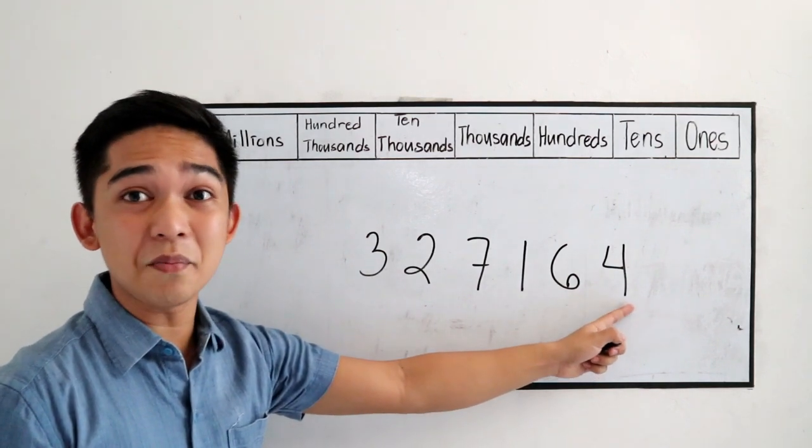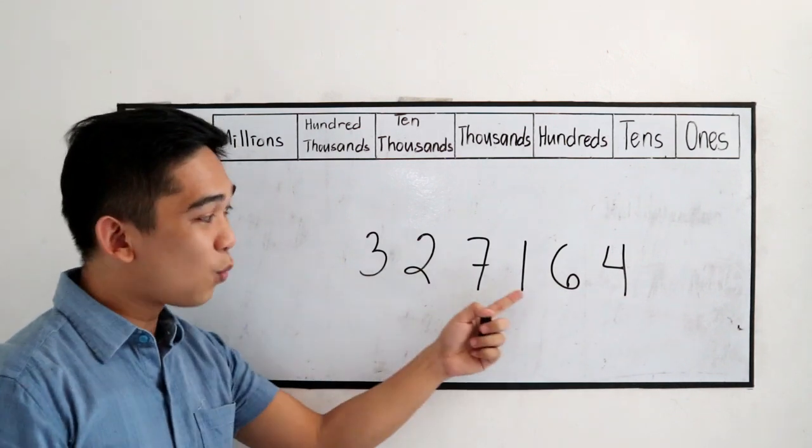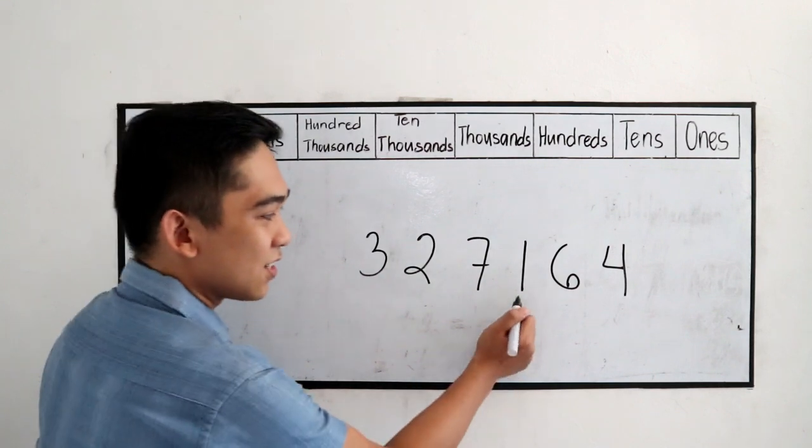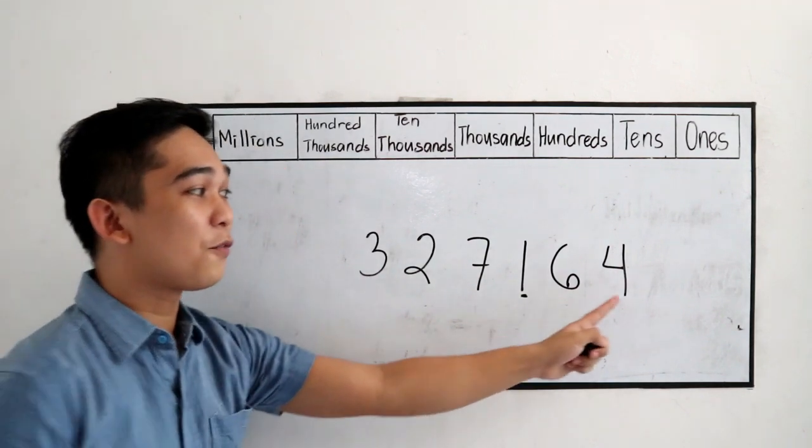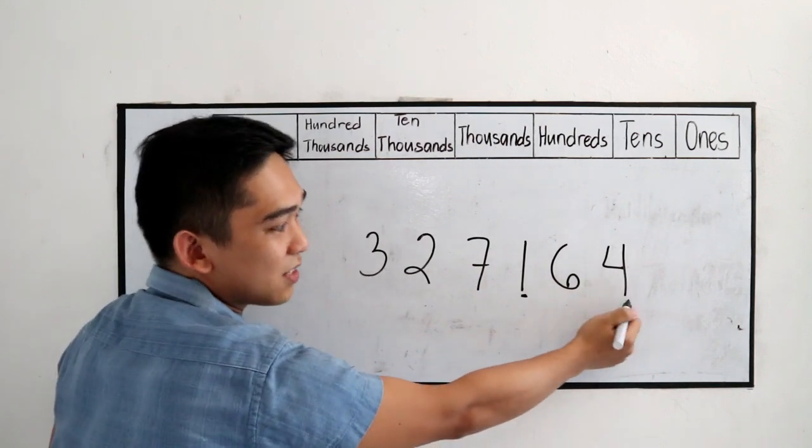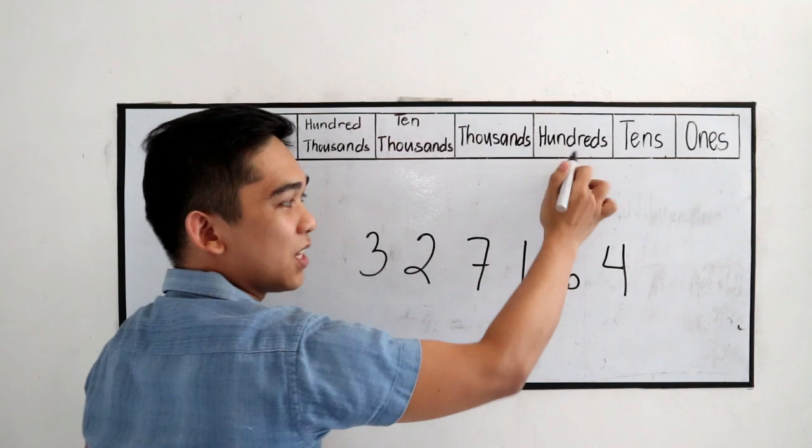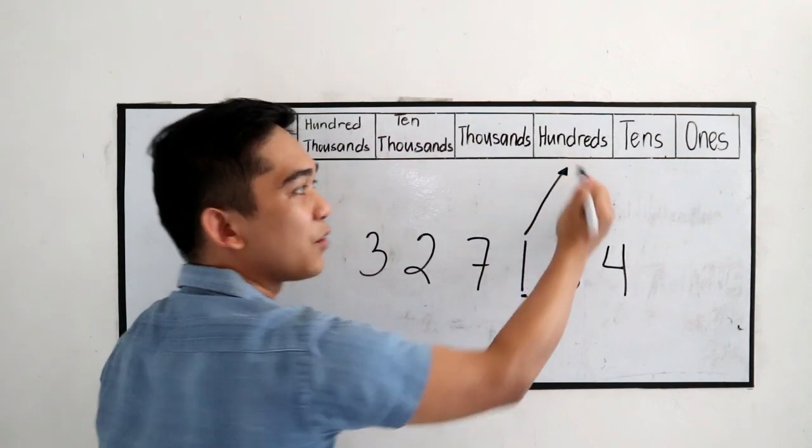And I want you to determine the place value of 1. So, from the right, going left, it's in the third position, 1, 2, 3. So, our place value is in the hundreds.